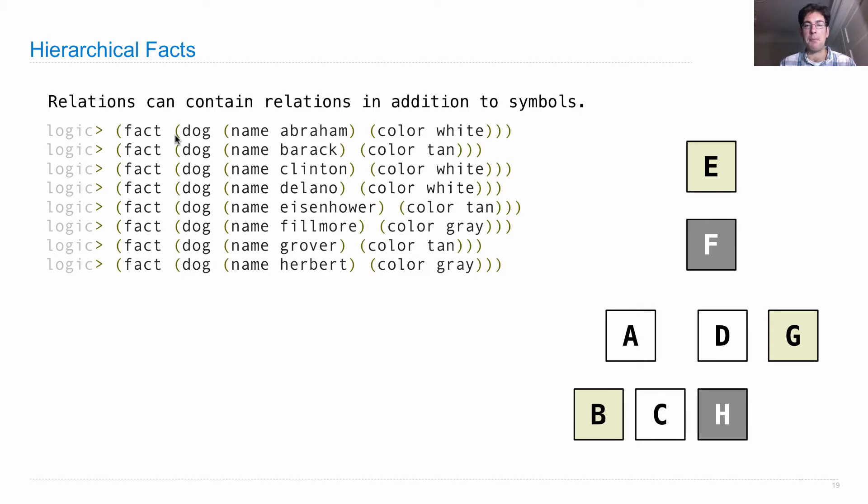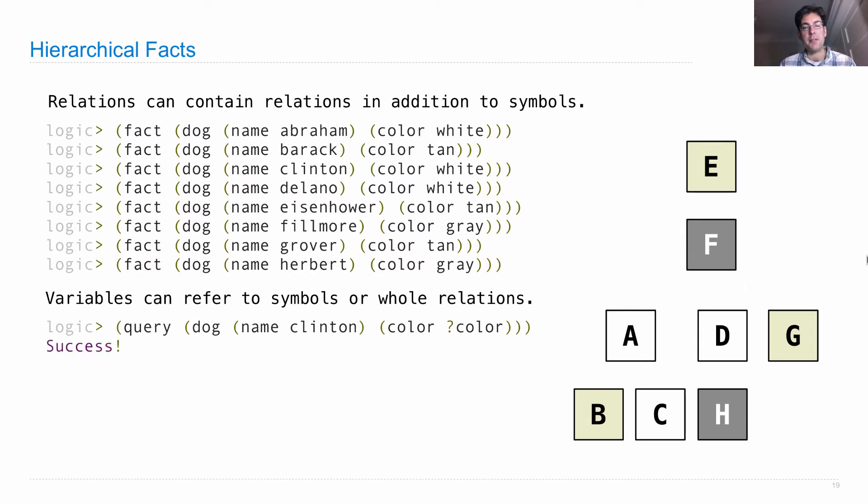What's different in this example is that there's structure to the facts. Now variables can refer to both symbols or whole relations. So I could ask very specifically, is it the case that there's a dog that's name as Clinton and the color is some color that needs to be specified? And the logic language will say, yes, there is just as long as that color is white.